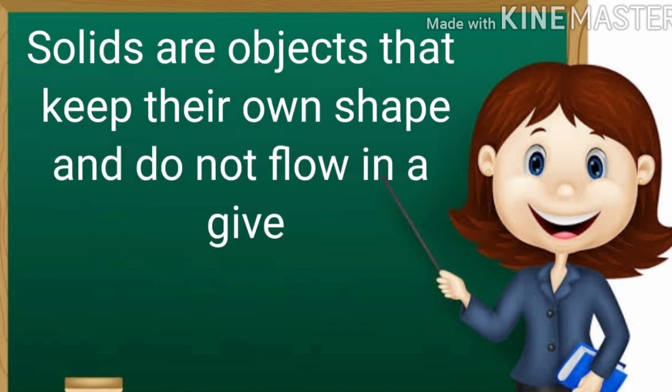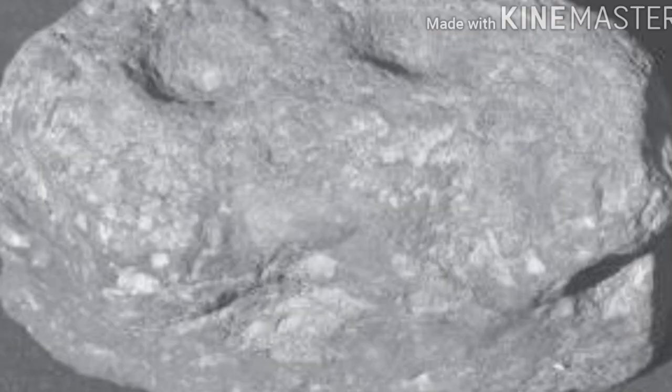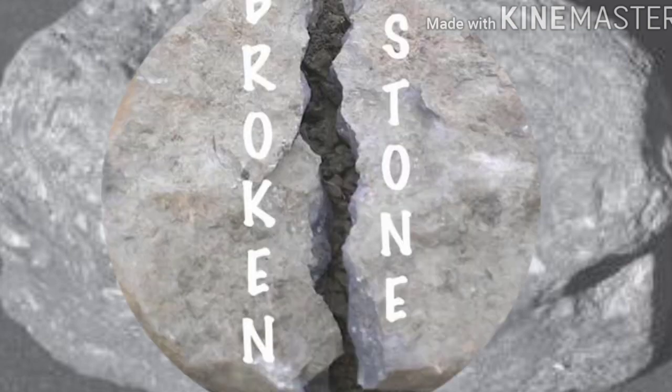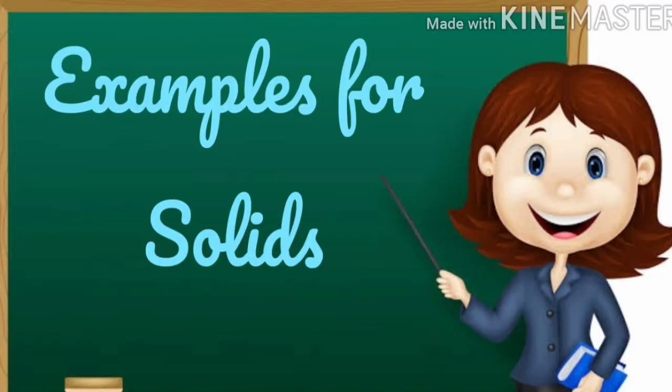The particles in solids are packed very tightly, so they cannot move freely. Solids are objects that keep their own shape and do not flow in a given temperature. The shape of the solid can be changed only when we break or cut them.